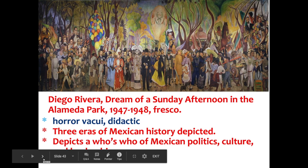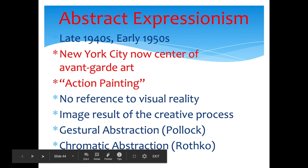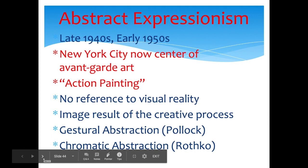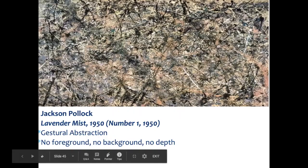Moving on to Abstract Expressionism — this period is in the 1940s, right after World War II and into the early 1950s. New York City becomes the center of avant-garde art. You have action painting with very quick, flurried movements — this is where you get Jackson Pollock. There's usually no reference to visual reality; abstract images result from the creative process. Gestural abstraction is Pollock, and chromatic abstraction is Rothko — that's the color theory.